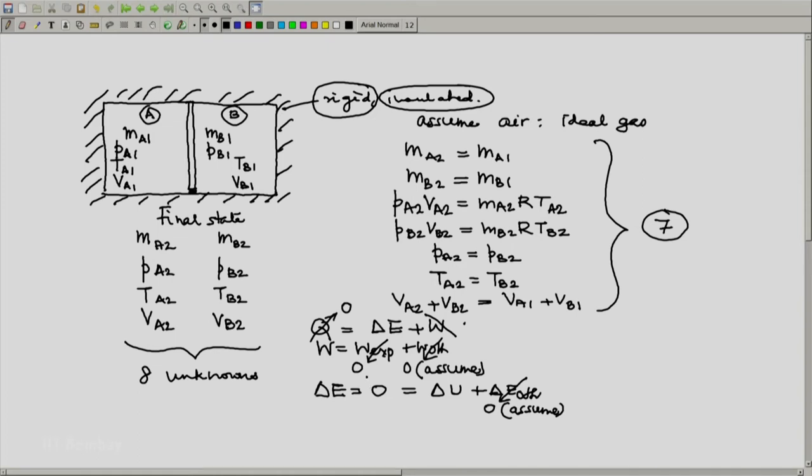And then the first law reduces only to this part. The change in the thermal energy of the system does not change through the process. And delta U equals 0 means delta UA plus delta UB is 0.